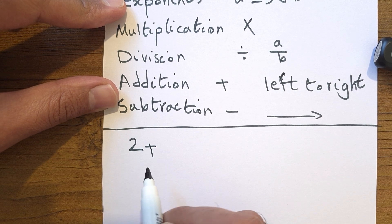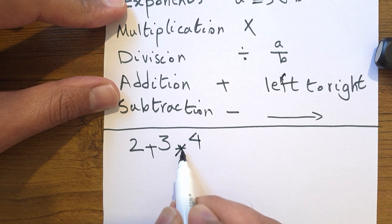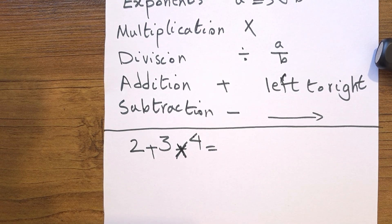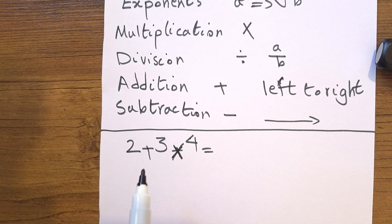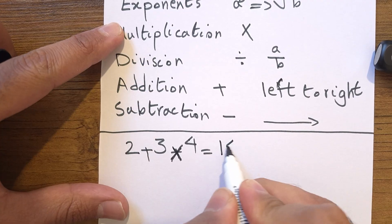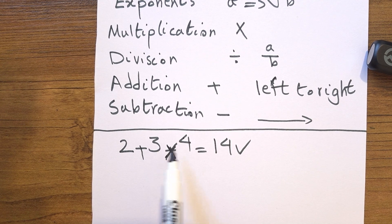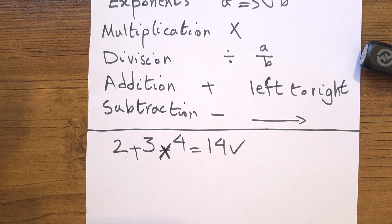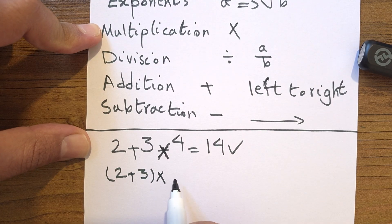For example, what is the value of 2 plus 3 times 4? There are no parentheses. We have addition and multiplication. Multiplication has a higher priority, so first we do 3 times 4, which is 12. Then 2 plus 12 is 14 — that's the correct answer. The wrong answer would be: 2 plus 3 equals 5, then 5 times 4 equals 20. That is not correct.